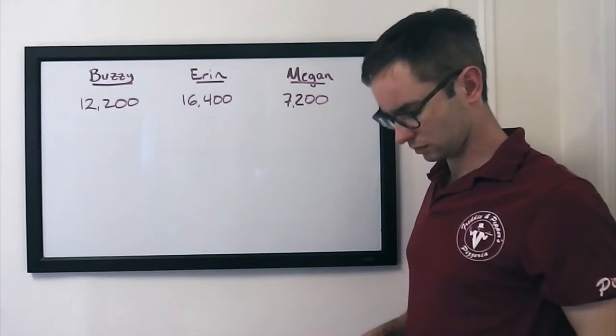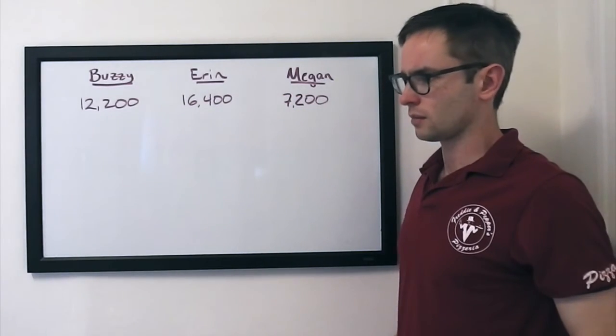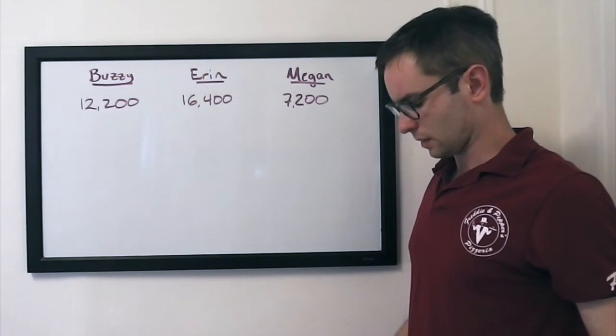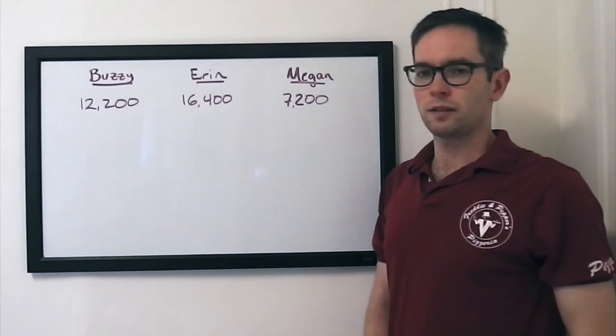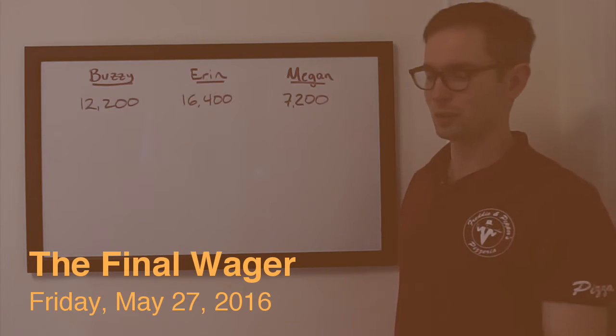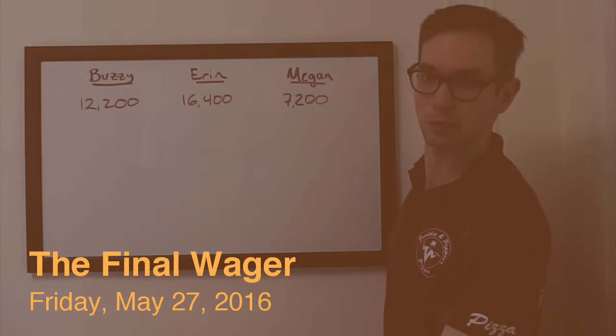Here comes Final Jeopardy, please. 19th century novels. Think about that. Make your wagers. Back in a moment. Well, Buzzy finds himself in an unusual position tonight. Welcome to the final wager. I'm Keith Williams.